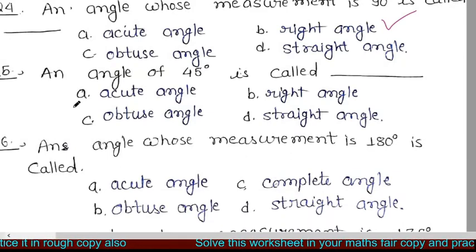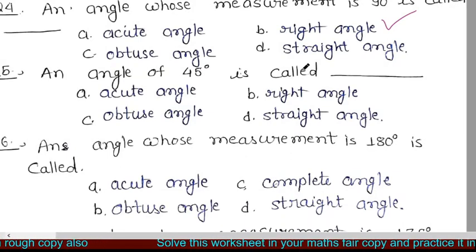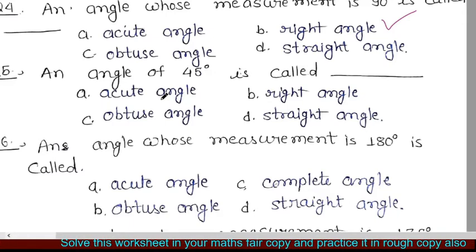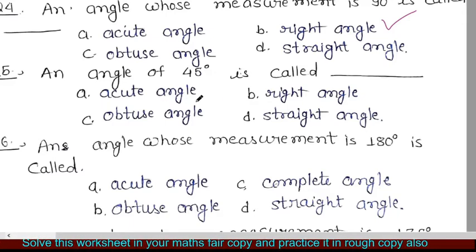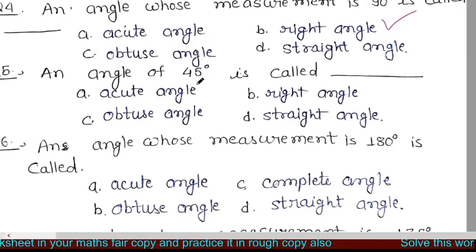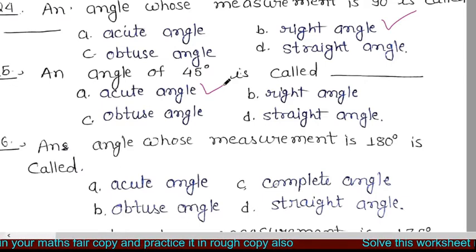The next question is: an angle of 45 degrees is called? 45 degree का angle क्या होता है? Your options are acute angle, right angle, obtuse angle, straight angle. तो 45 degree का angle होता है acute angle.